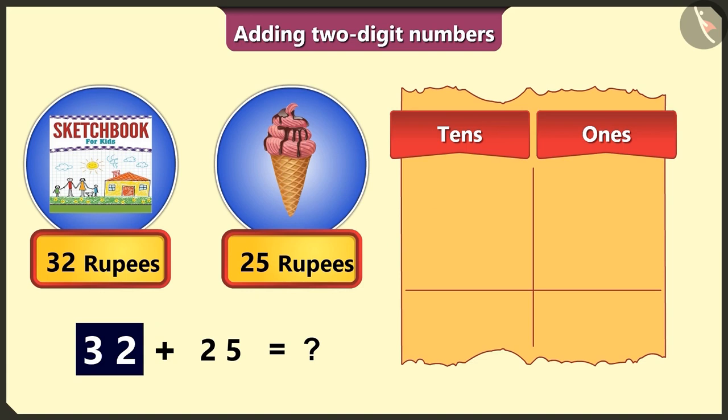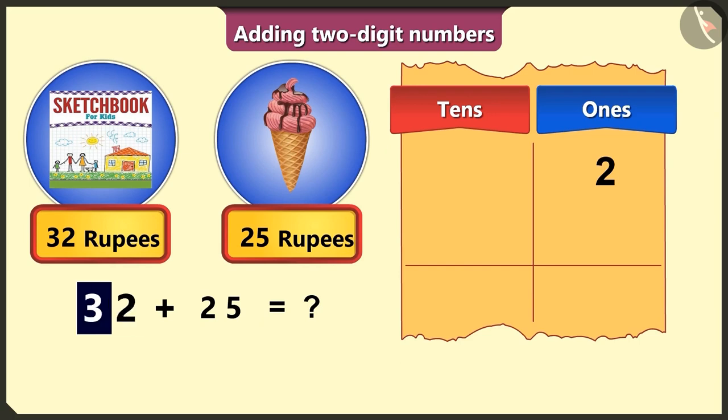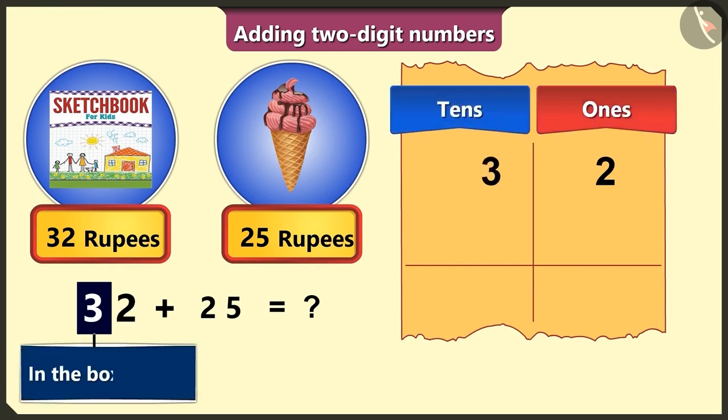In a two-digit number, the last digit is always written in the ones box and the first digit in the tens box.